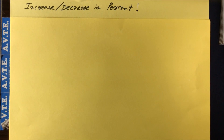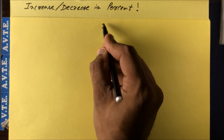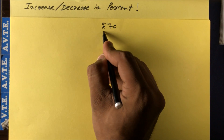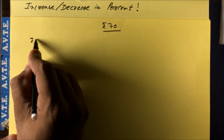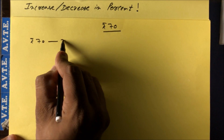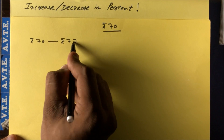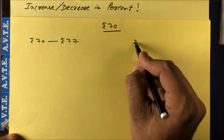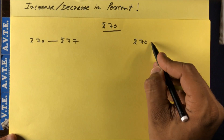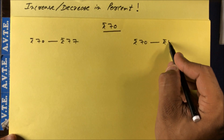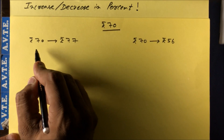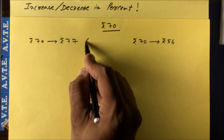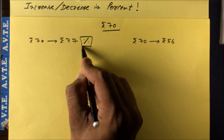Let's say we have rupees 70 as the price of one bottle. This price of 70 is increased to rupees 77, and the price of rupees 70 is decreased to rupees 56. We have to find the change in percentage in both cases.